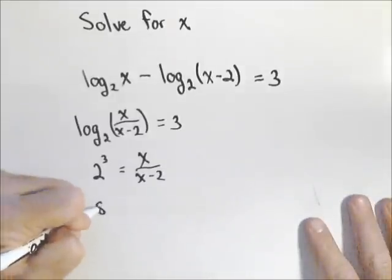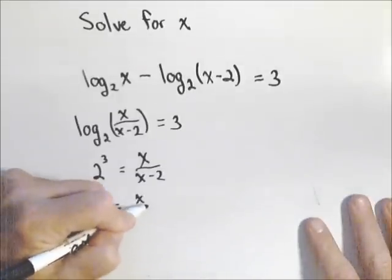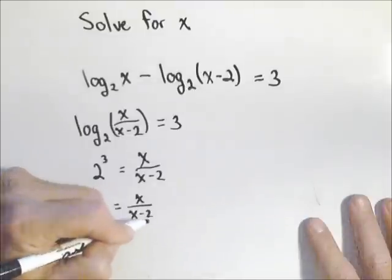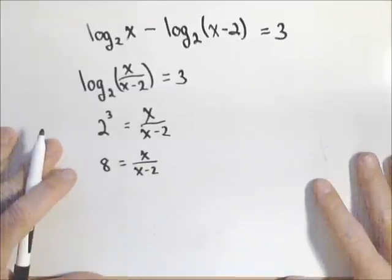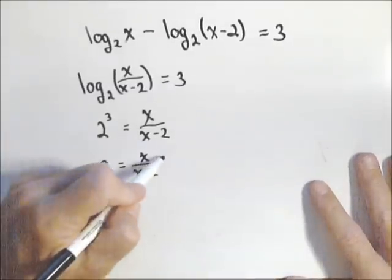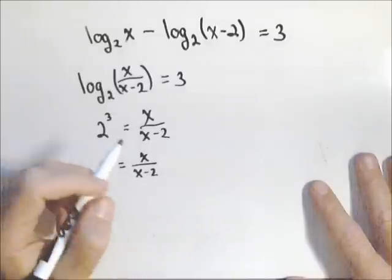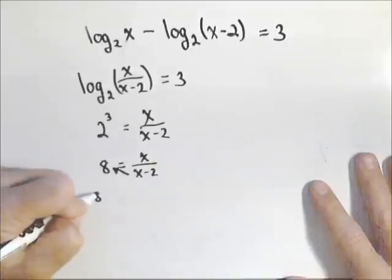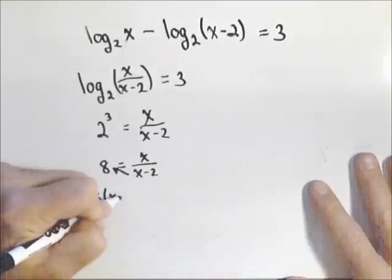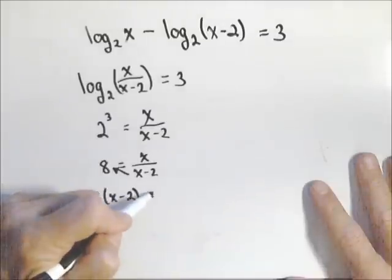So what we have is that eight equals x over x minus two. Now the best way to solve this is to get rid of that denominator. So basically, we're going to cross multiply the x minus two, or in other words, multiply both sides by x minus two.